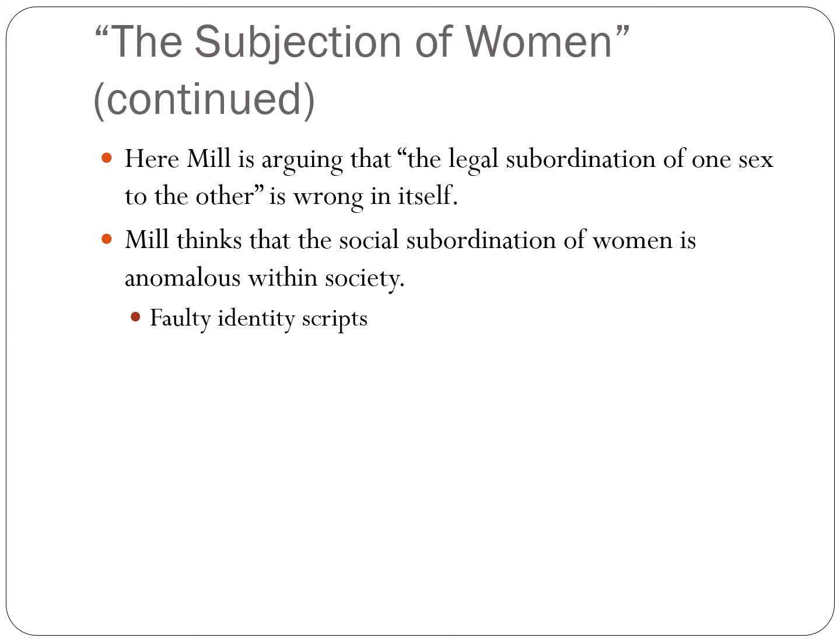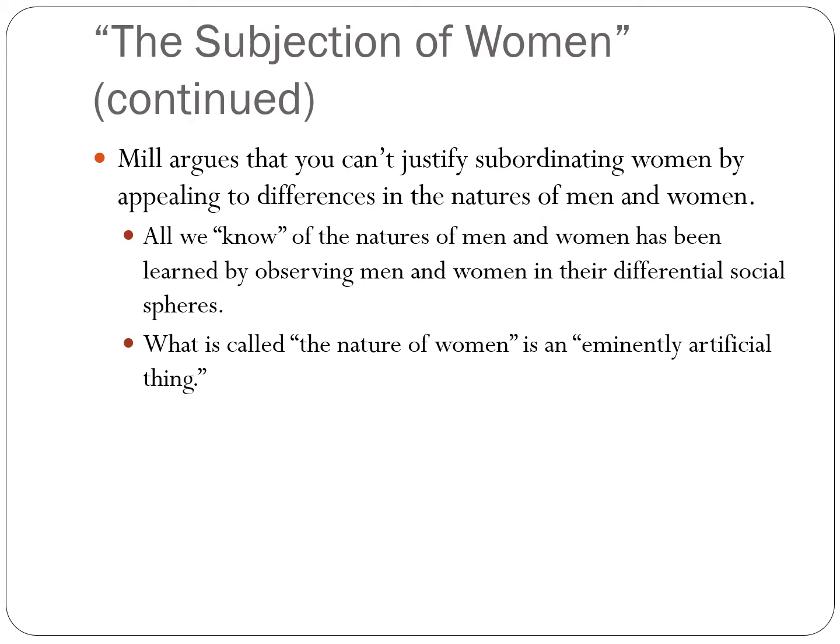Mill, collaborating with Harriet Taylor — his best friend — and seeing how incredibly bright she is, comes to see that it's not about women at all, not about sex at all. It's simply about social constructs. Mill argues that you can't justify subordinating women by appealing to differences in their natures.